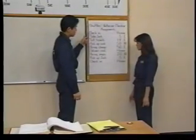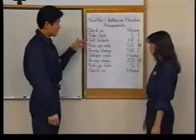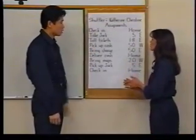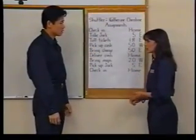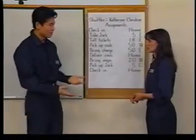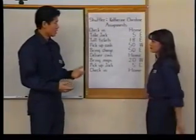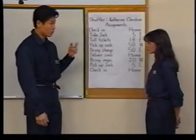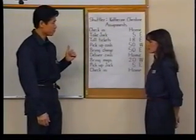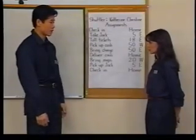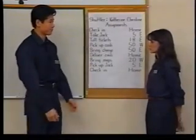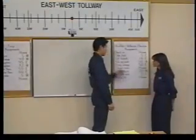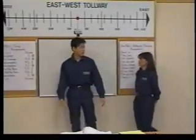First, you take Jack to 5E, then you bring some more toll tickets over to 18E, and then you shuttle on over to 50W. Wait a minute — who's Jack and what's 5E? I can't believe it. Didn't they tell you anything about this job? Jack is the boss's son. He works in a toll booth at 5E, which is an exit off the tollway five miles east of here. Every day somebody has to take Jack over there, and today it's your turn. Do I come back here after I drop him off? No, just go right on down the list. They don't pay us for hanging around the office.